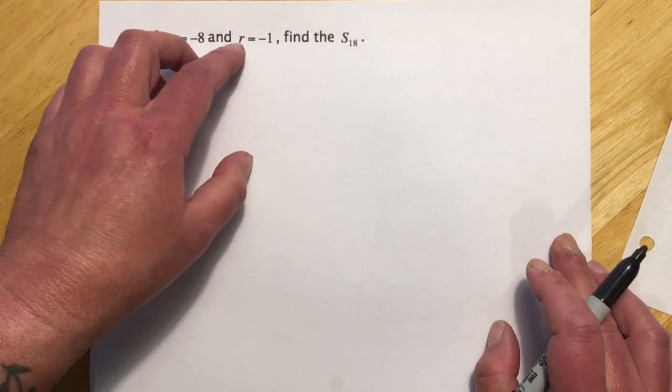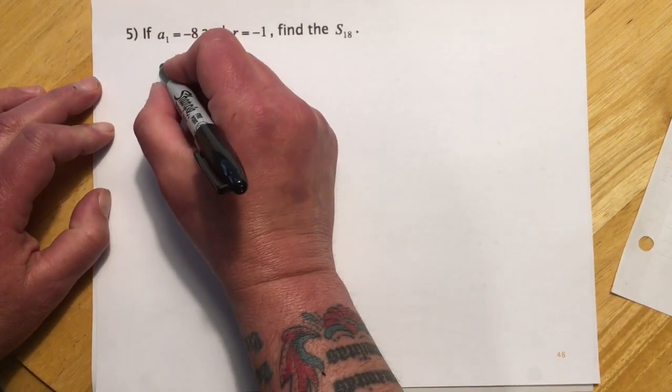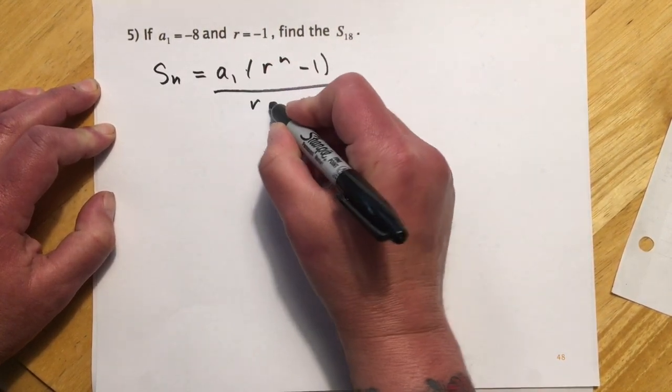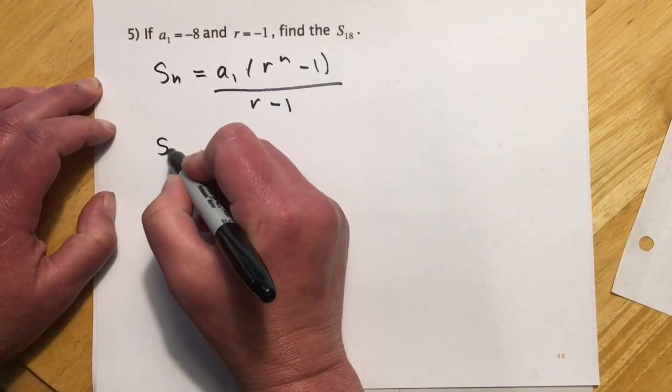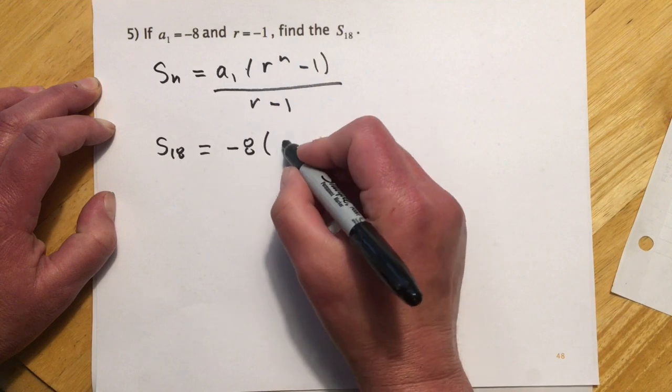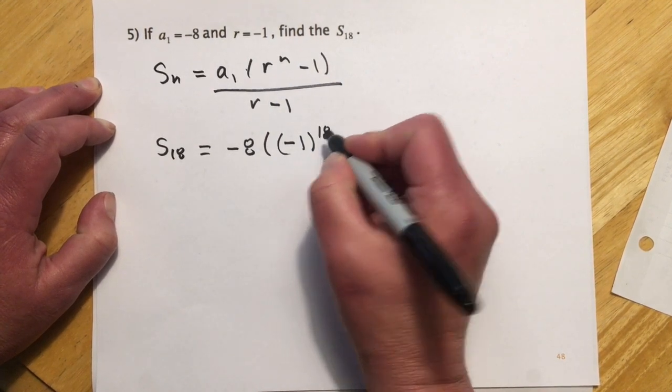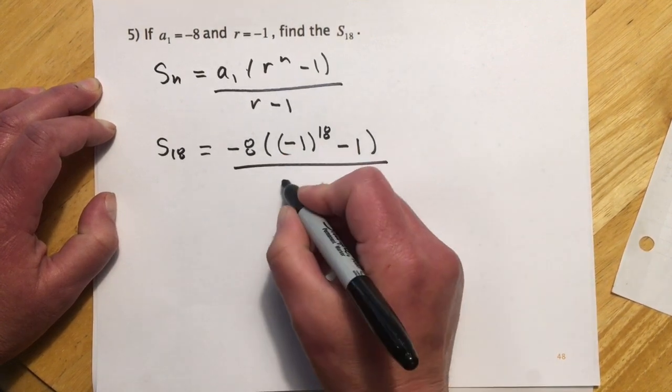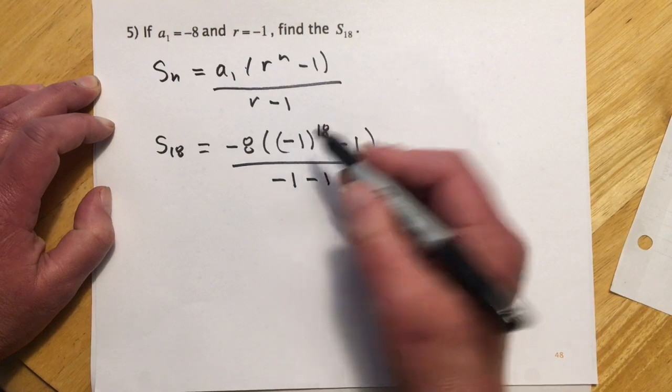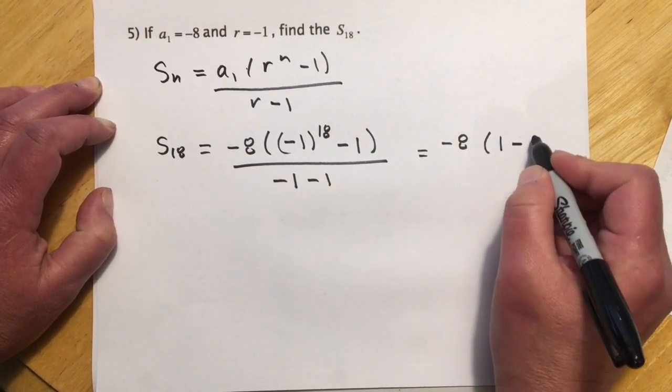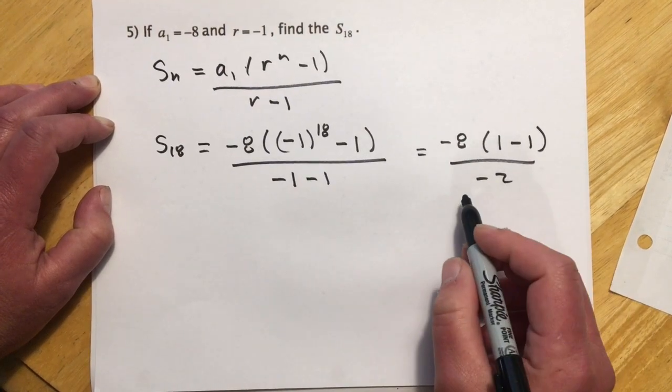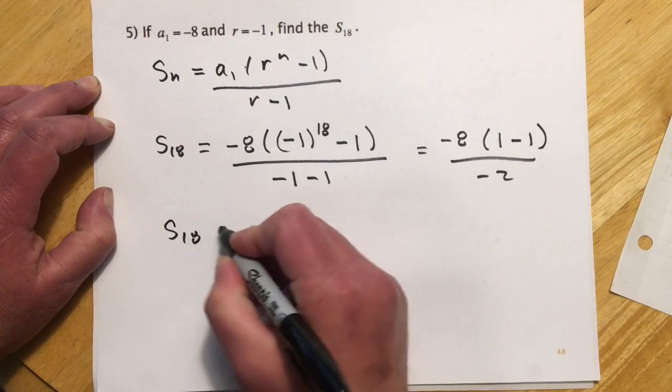Question 5. A sub 1 is negative 8. R is negative 1. Find the sum through 18 terms. So again, I'm just going to copy down what I have here. And so this is going to be the sum through the 18 terms. So this becomes negative 8, and then 1 minus 1, over negative 2, but that's 0. So this is one where the terms kind of flip back and forth and cancel one another out. So the sum through 18 is 0.